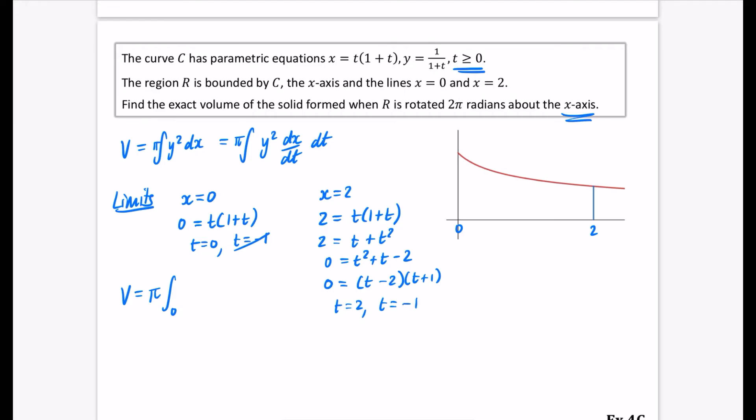Have I factorised that correctly? Yeah I have. So t can't be minus 1 because it's got to be greater than 0. Wait, no I haven't factorised this correctly. Let me fix this. It's (t+2) and (t-1). So t is either minus 2 or t is equal to 1. Obviously it can't be minus 2 because it's got to be greater than 0. I can do all this further maths but I can't factorise a quadratic.